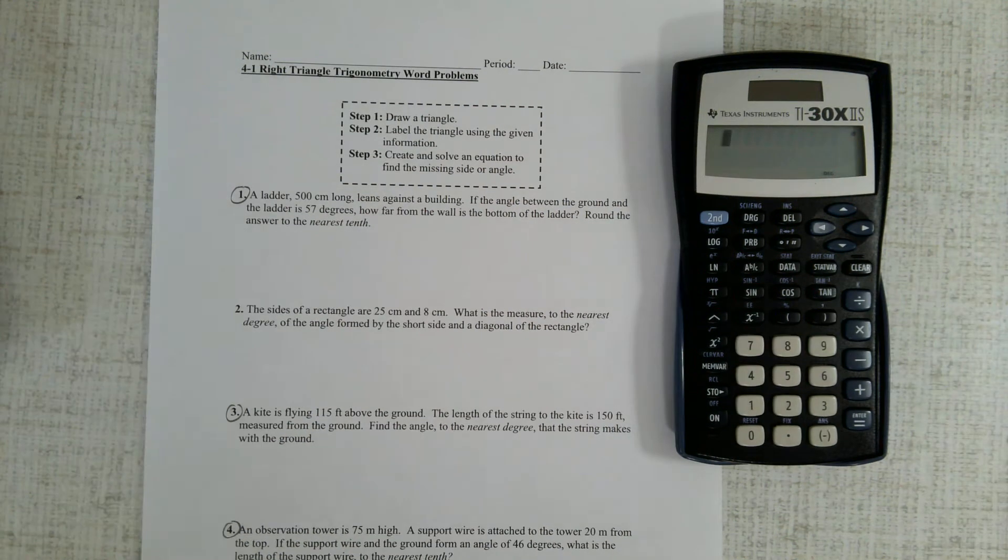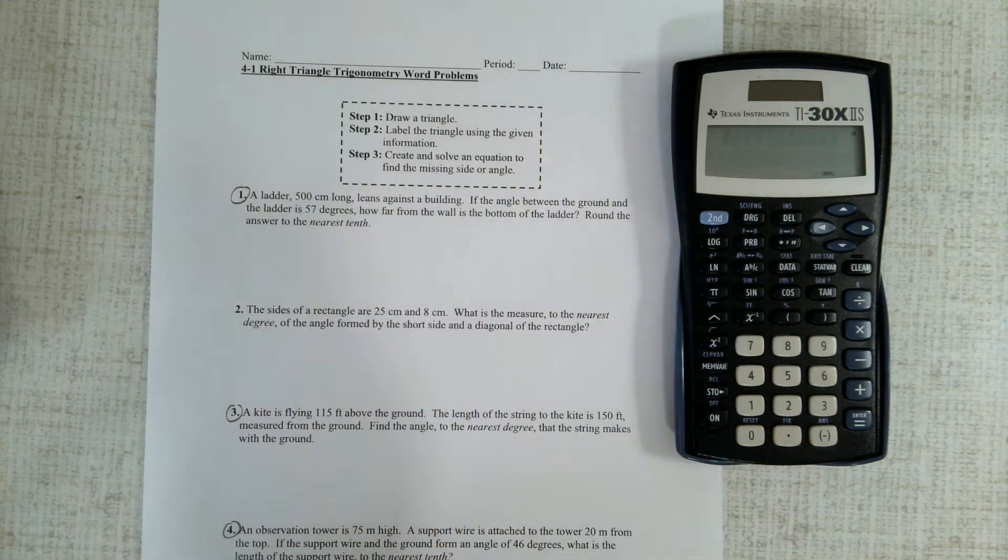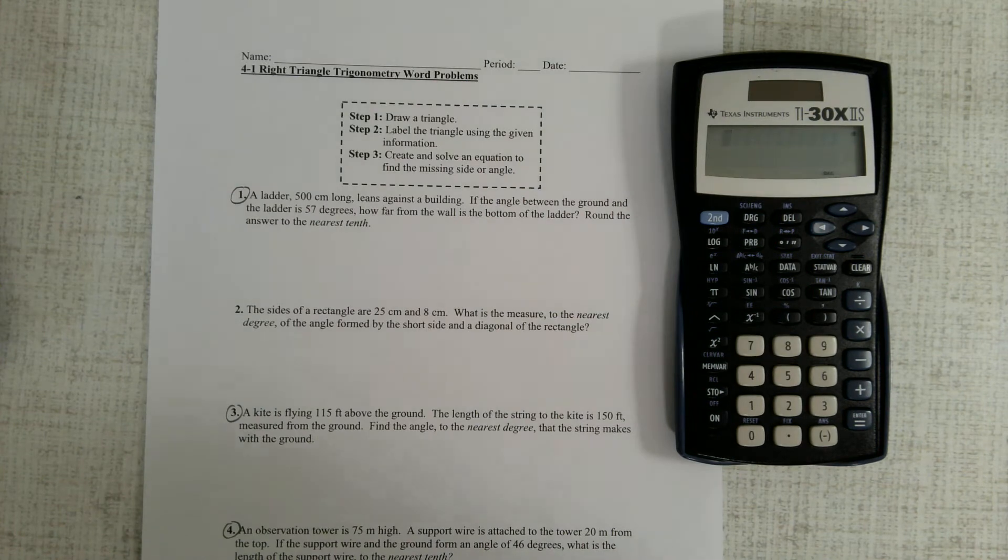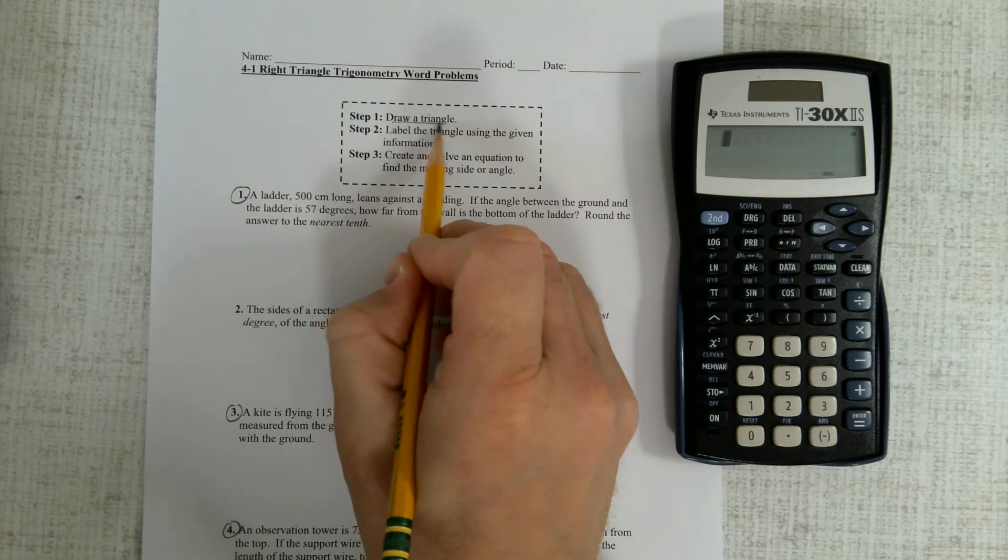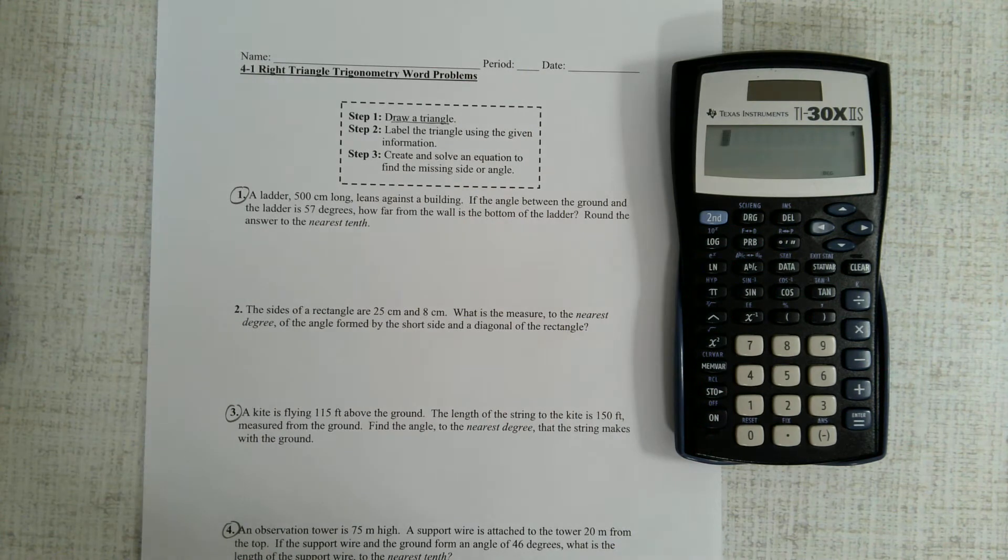Alright, hello everyone, this is Mr. Crozier. I wanted to give you some help on your story problems you've been working on here. I'm going to do some of them. I've circled the ones I'm going to do, and hopefully that will help you with the rest of them. First off, the key to these problems is to draw a triangle. All of them are right triangle problems, so you want to make sure you draw a triangle and label it.